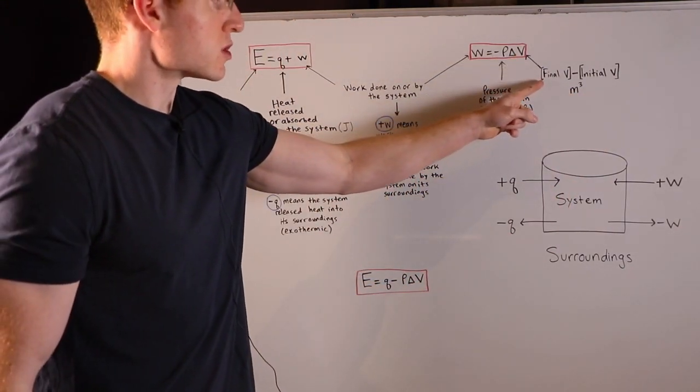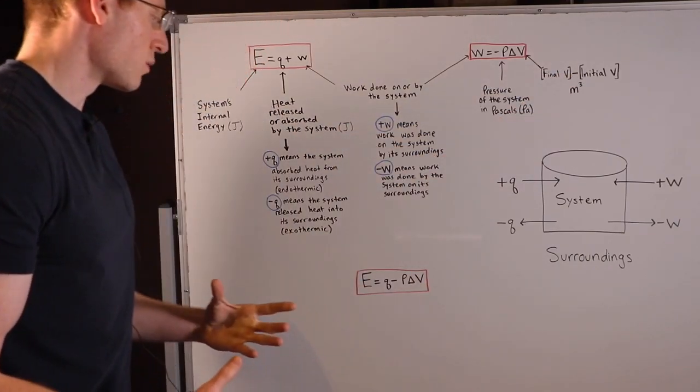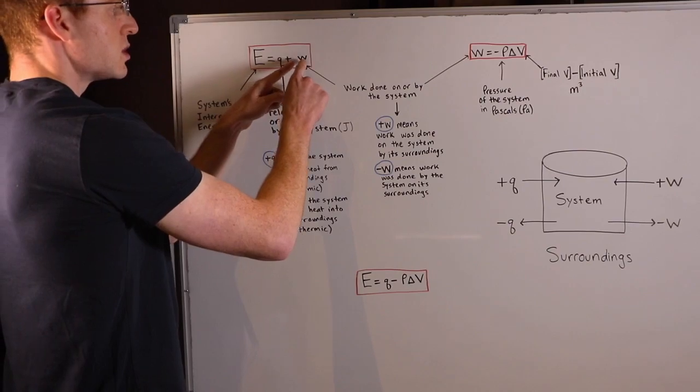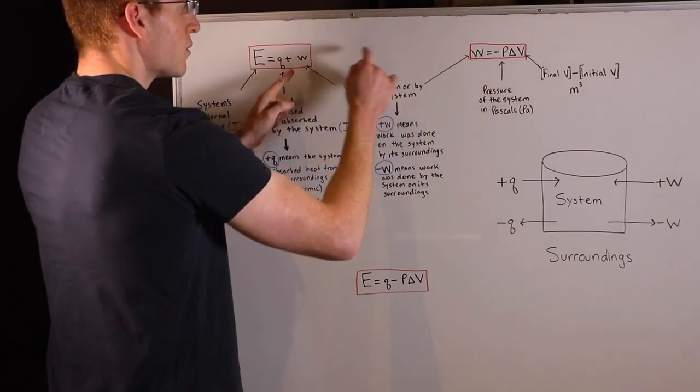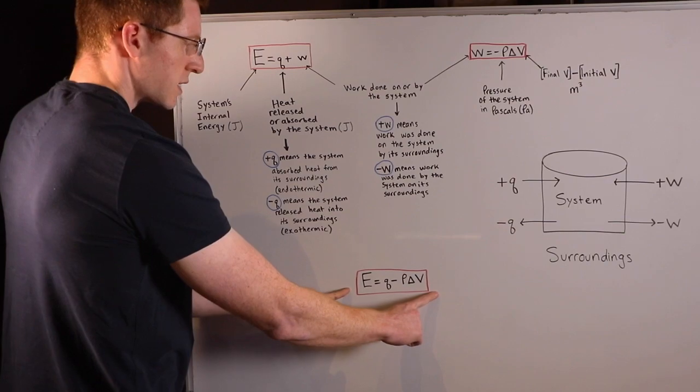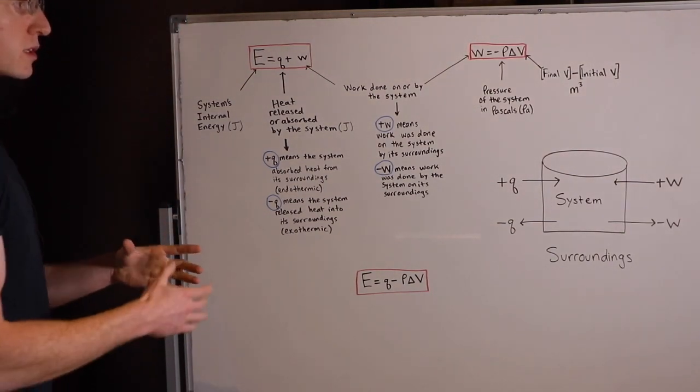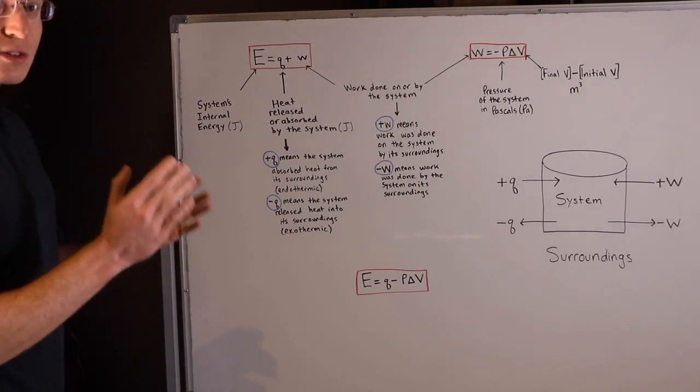And change in volume, of course, is just final volume minus initial volume. So putting these two equations together, if I just substitute in this right here for W, you get this final equation down here. And this turns out to be particularly useful for solving problems concerning this concept. So let's do that now.